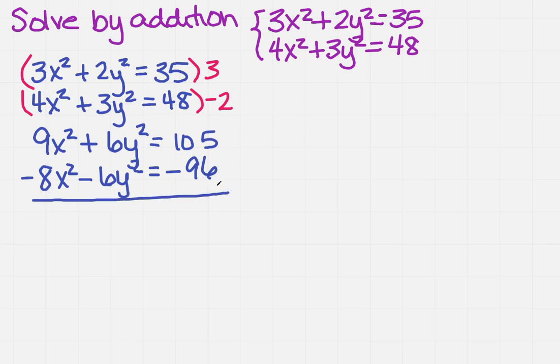So now I'm going to add straight down, and notice when you add straight down, the y squareds are going to cancel, so that's going to give me x squared equals, and that's going to give me 9.